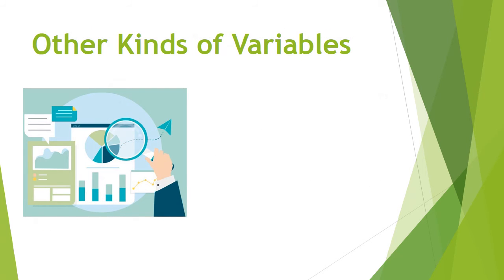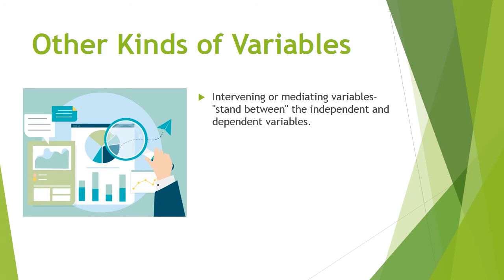Independent and dependent variables are the most commonly used kinds of variables in a quantitative research design. But here are the other kinds of variables you might encounter in the course of your research. Intervening or mediating variables are variables that stand between the independent and dependent variables, and they show the effects of the independent variable on the dependent variable.